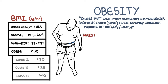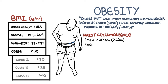Another measurement of obesity is waist circumference, which takes into account central adiposity and has a better correlation to cardiovascular disease. Obesity is defined when the waist circumference in men is greater than 102 cm or 40 inches, and in women greater than 85 cm or 35 inches. The waist circumference is measured at the level of the iliac crest.